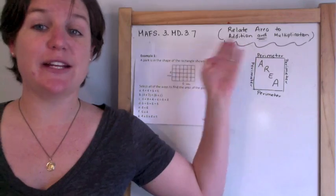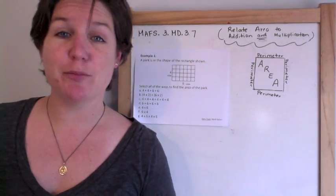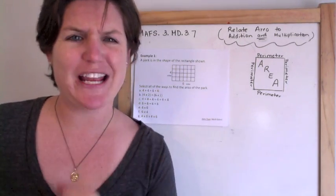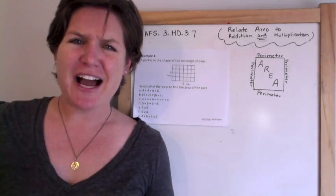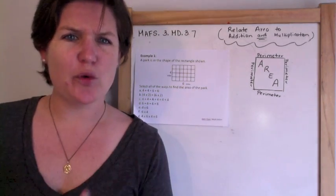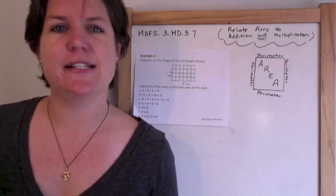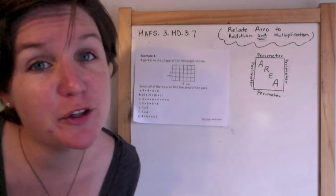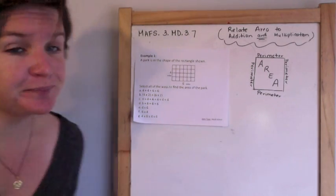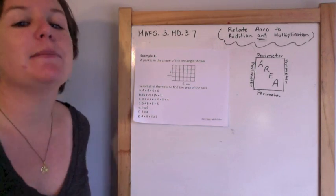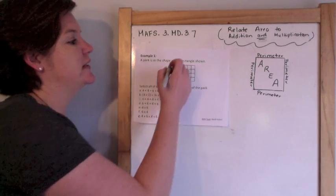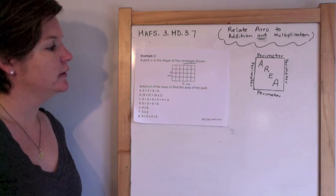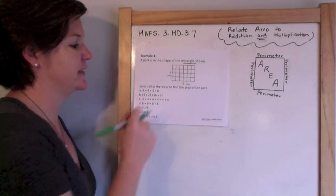Today you will learn that we can use addition and multiplication to determine the area, to get it faster. I speak fast — fast is good as long as fast is efficient. So without further ado, let me teach you. Example one: a park is in the shape of a rectangle shown, with four miles and six miles.